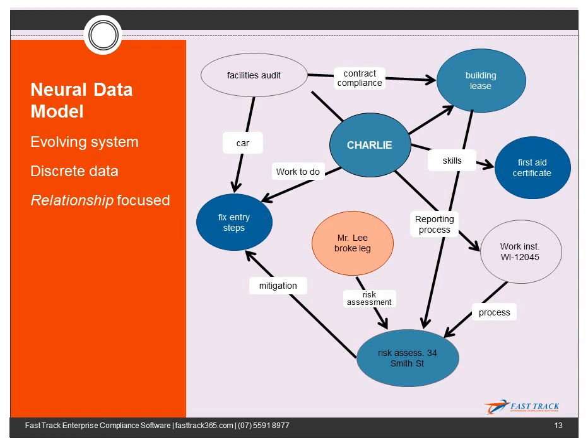So by following those links, by clicking on hyperlinks within the software, you can trace that Charlie has a relationship with Mr. Lee, and the fact that he is responsible for the location where Mr. Lee broke his leg.